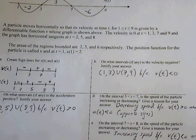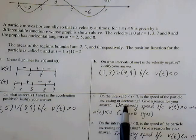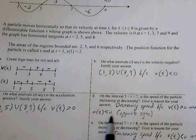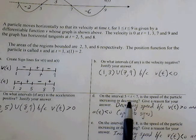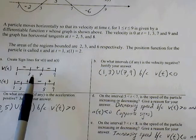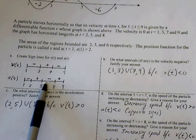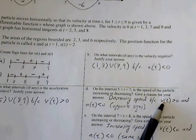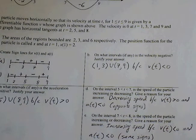Part D, on interval between 5 and 7, is the speed of the particle increasing or decreasing? Give reason for answer. This is where we have to compare our signs between velocity and acceleration. Between 5 and 7, velocity will be positive but acceleration will be negative. So we're going to have decreasing speed simply because velocity is positive, acceleration is negative. Opposite signs indicate decreasing speed.